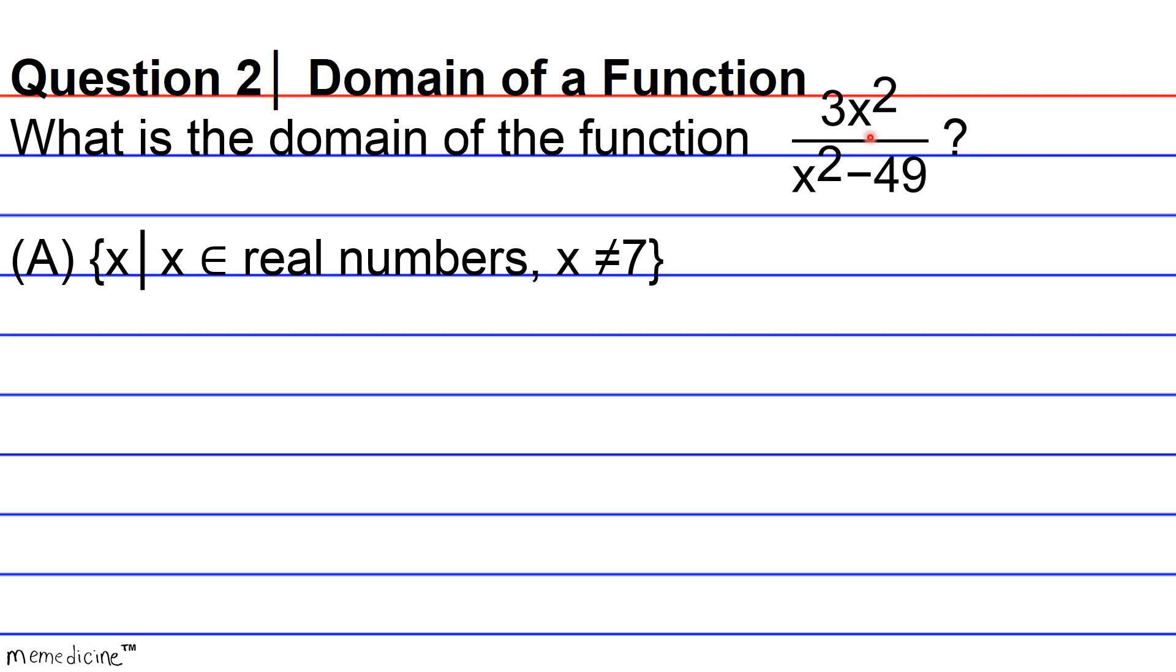they have decimals that continue on and on forever. Such, and you know, they never repeat, and they never terminate. Examples of irrational numbers are going to be the square root of 2. When you evaluate the square root of 2, it never terminates. Also pi,